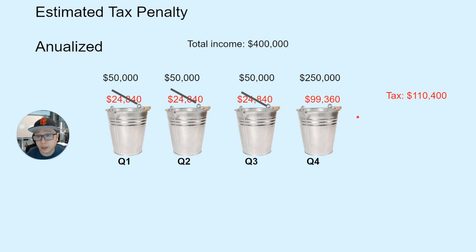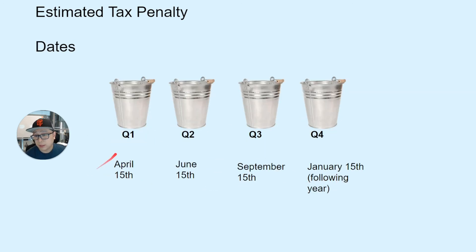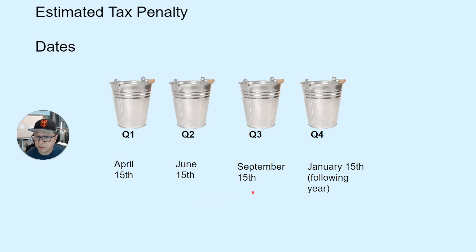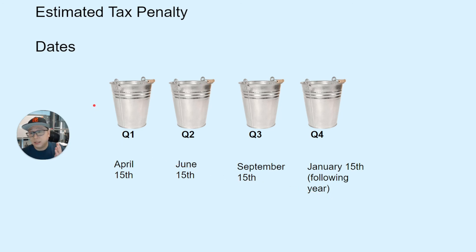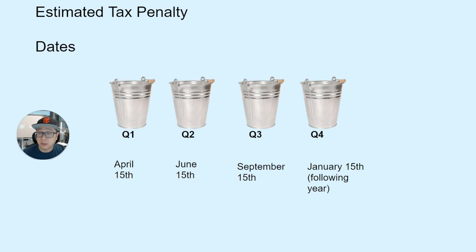The due dates for quarterly payments are: April 15th for Q1 (covering January through March), June 15th for Q2 (covering April through end of May), September 15th for Q3 (covering June through end of August), and January 15th of the following year for Q4 (covering the remainder of the year).